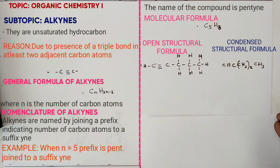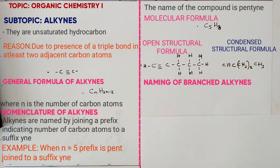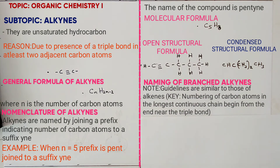Next we look at naming of branched alkynes. The guidelines are: 1) Identify the longest continuous carbon chain. 2) Number the carbon atoms from the end nearest the triple bond. 3) Locate the position of branches — between a name and a numeral, separate by a hyphen; between numerals, separate by a comma. For more than one similar branch, use di- for 2, tri- for 3, tetra- for 4. For more than one different branch, name them alphabetically.